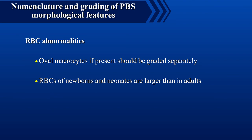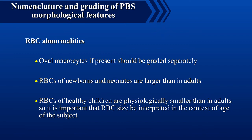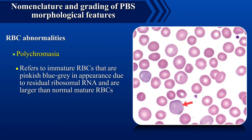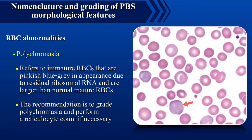RBCs of newborns and neonates are larger than in adults, but RBCs of healthy children are physiologically smaller than in adults, so it is important that RBC size be interpreted in the context of the age of the subject. Polychromasia refers to immature red blood cells that are pinkish blue to grey in appearance due to residual ribosomal RNA and are larger than normal mature red blood cells. The recommendation is to grade polychromasia and perform a reticulocyte count if necessary.